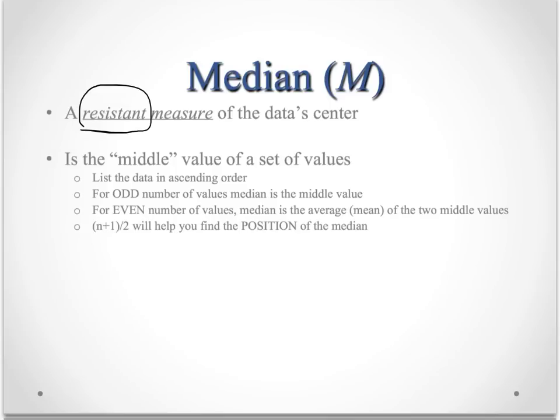Then if you have an odd number of values, say you have 15 values, the median is the middle value. The middle value would be the 8th value. For an even number of values, the median is the average of the two middle values.